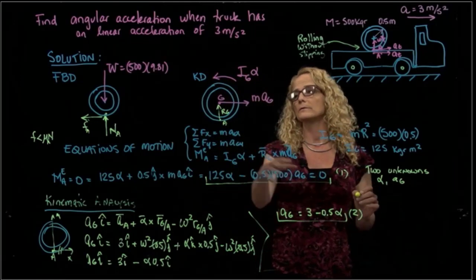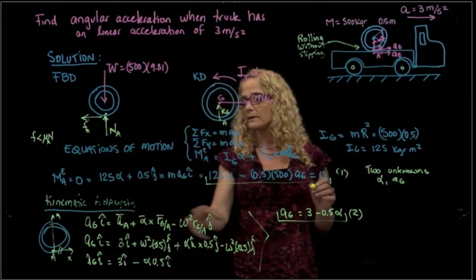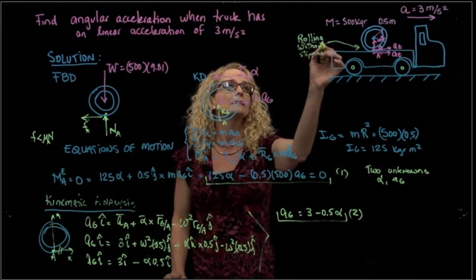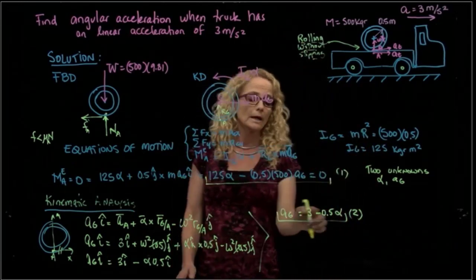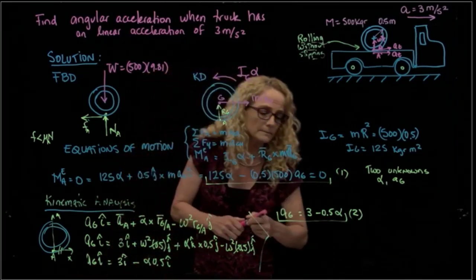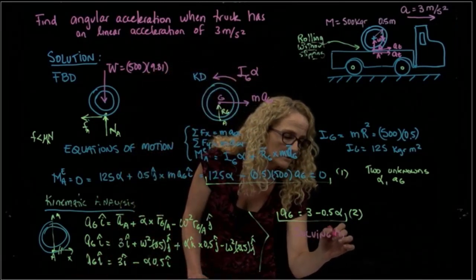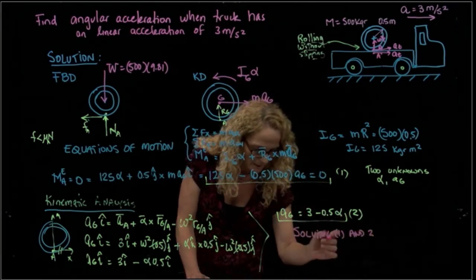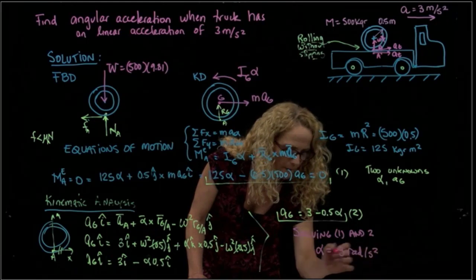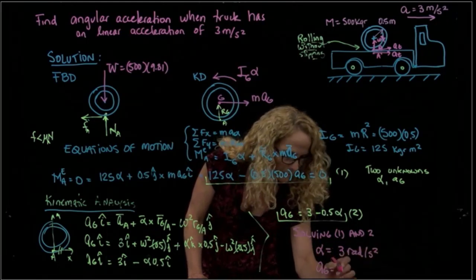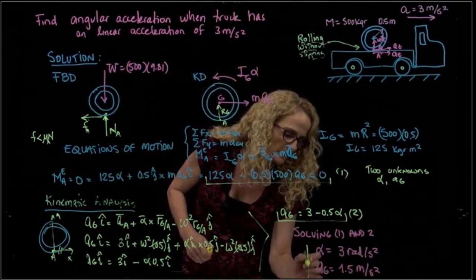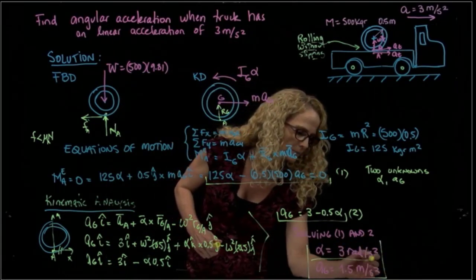The first equation came from the equations of motion, and the second from the kinematic analysis — possible because the rolling without slip condition provided enough information to relate the center of gravity acceleration and the angular acceleration. Solving equations 1 and 2 together, we get alpha equals 3 radians per second squared, and the acceleration of the center of gravity equals 1.5 meters per second squared. Those are the results we were asked to find.